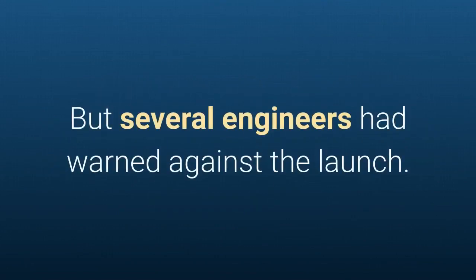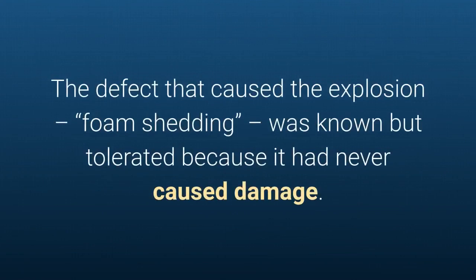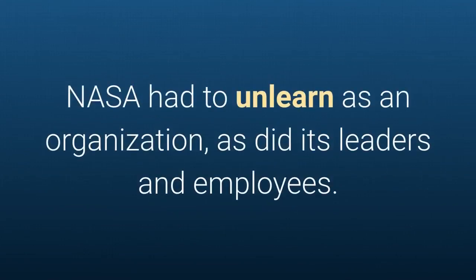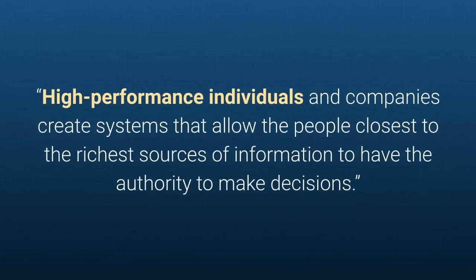When NASA's orbiter Challenger exploded right after launch in 1986, executives believed it was an unfortunate fluke — but several engineers had warned against the launch. The Columbia explosion in 2003 shattered complacency. The defect that caused it — foam shedding — was known but tolerated because it had never caused damage. NASA had to unlearn as an organization, designing new protocols based on employee experiences and honest conversations about failure.